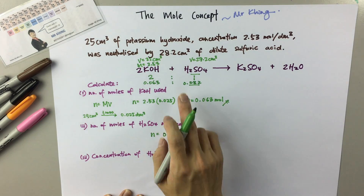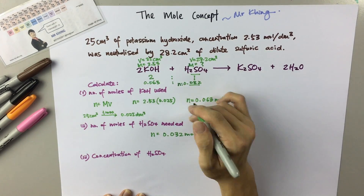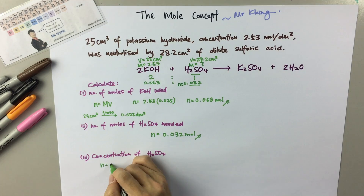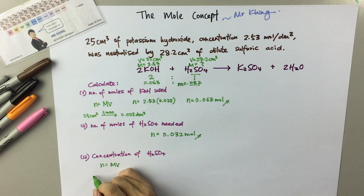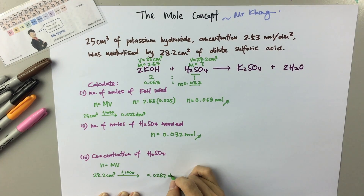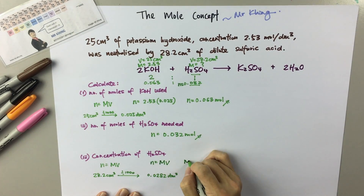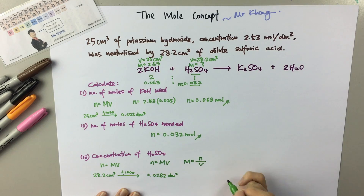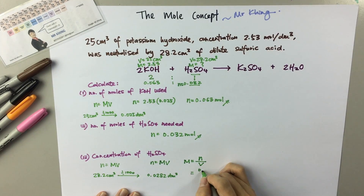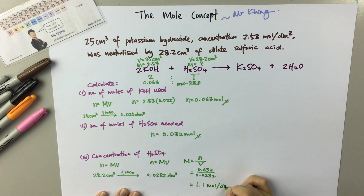Then next, concentration of sulfuric acid. They are asking for M (molarity). We have the volume and the number of moles. We use the formula M equals to N divided by V. Same thing — convert the volume: 28.2 cm³ divided by 1000 gives 0.0282 dm³. So M equals to 0.032 divided by 0.0282, and the concentration of sulfuric acid will be 1.1 moles per dm³.